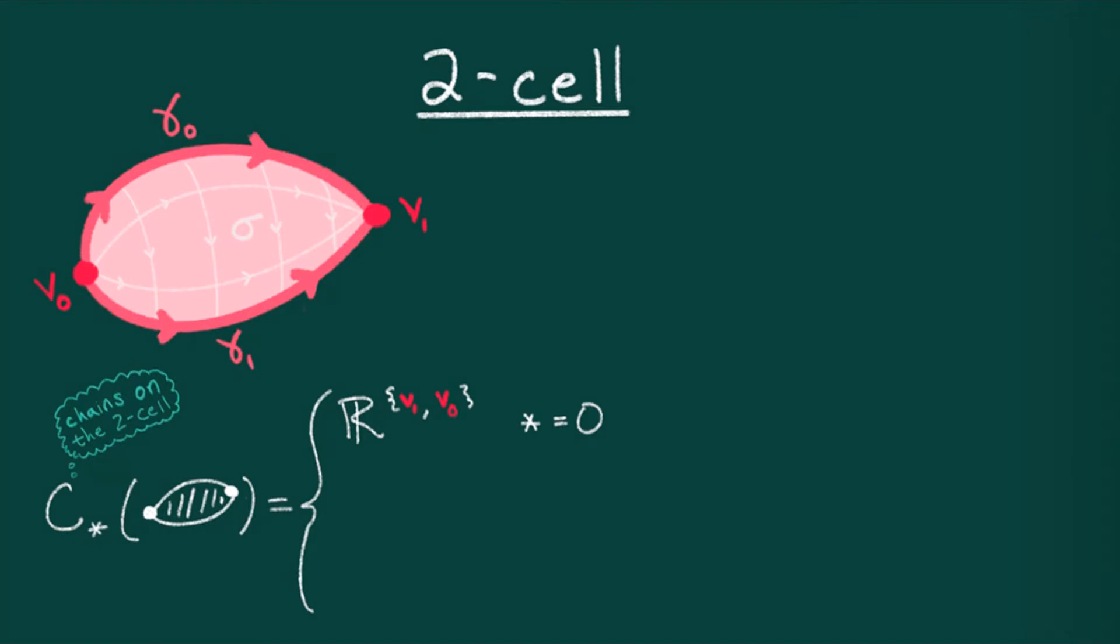As the two cell has two edges, the degree one piece will consist of formal linear combinations of these two edges, gamma zero and gamma one.